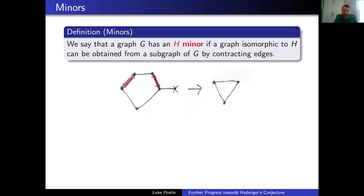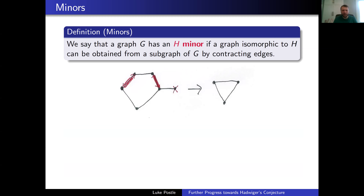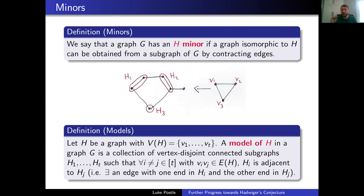Maybe a more useful way to think about minors is as models. Let H be a graph. A model of H is a collection of vertex-disjoint connected subgraphs, where for every vi, vj in E (an edge in H), they're adjacent — there's an edge with one end in Hi and the other end in Hj. Before I had the contractions; if you undo the contractions, you get the connected subgraphs. So v1 pulls back to h1, v2 to h2, v3 to h3, and there must be an edge with one end in each. G has an H-minor if and only if there exists a model of H in G.